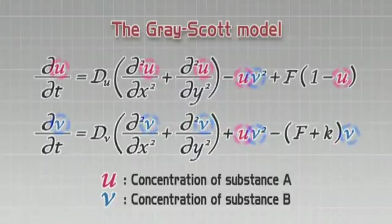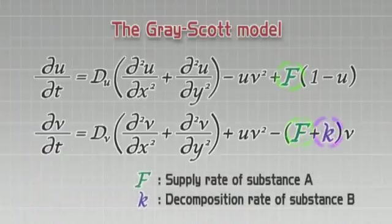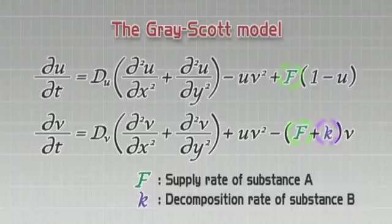U represents the concentration of substance A, and V that of substance B. F is the supply rate of substance A, and K represents the decomposition rate of substance B.